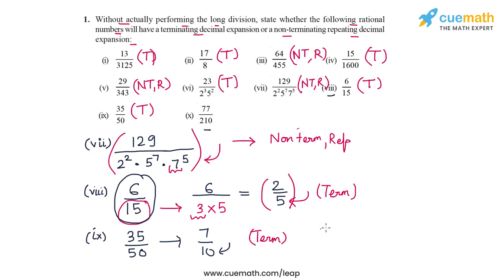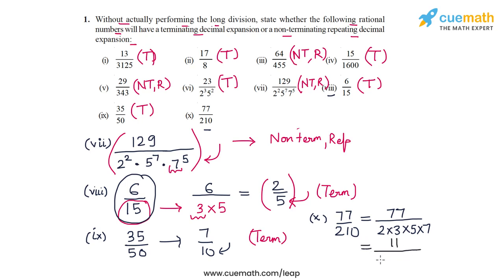Part 10 is 77/210. Writing 210 in prime factorized form: 2 × 3 × 5 × 7. Canceling the common factor of 7 gives 11 in the numerator and 2 × 3 × 5 in the denominator. Even after reducing to lowest form, the denominator has the prime factor 3, which means the decimal expansion of 77/210 will be non-terminating and repeating.